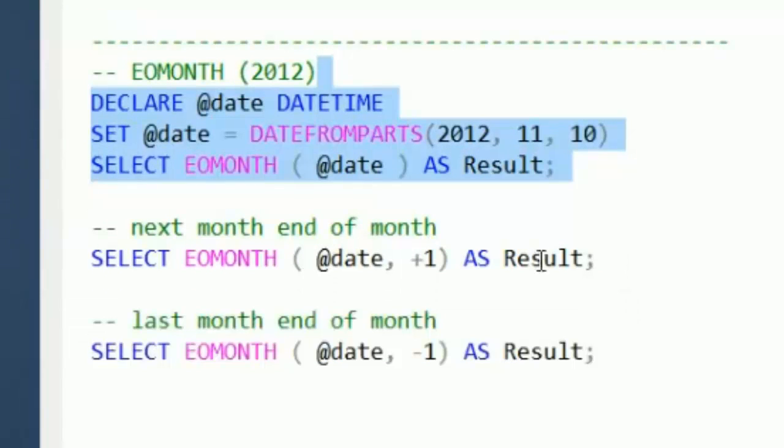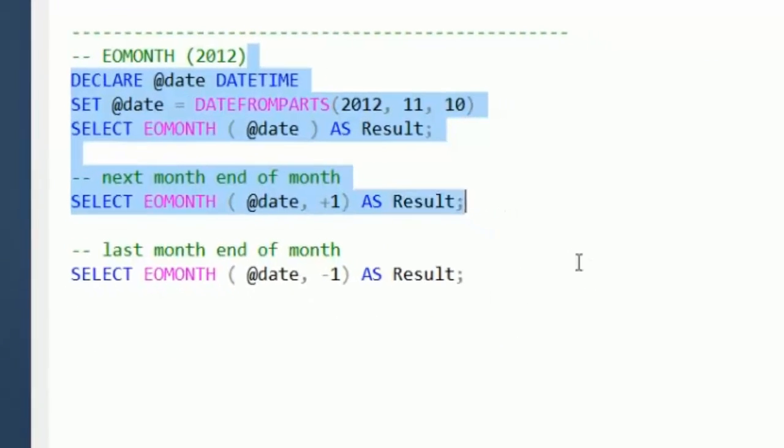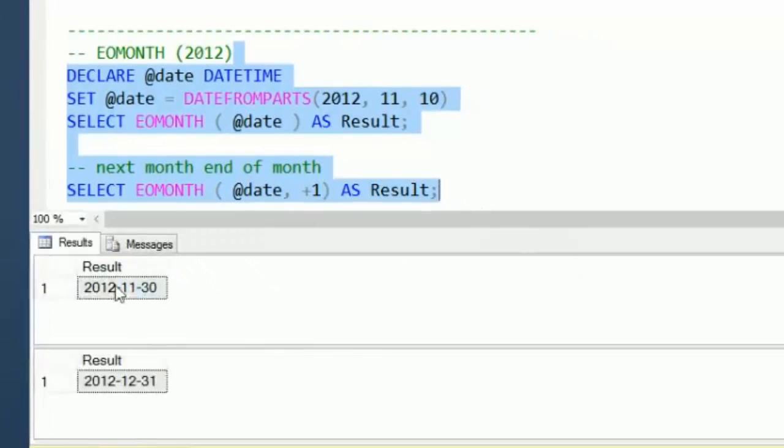Then I'm going to do the same calculation, but I'm going to give it end of month with plus one month in the future. The first one gets us November 30th, and the next one gives us December 31st, because there's 31 days in December.